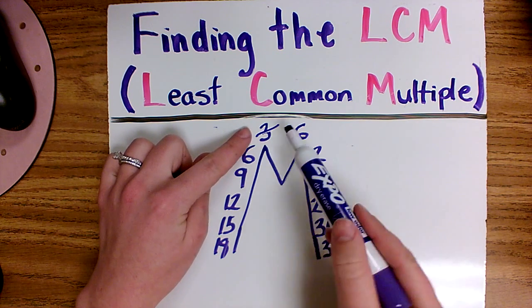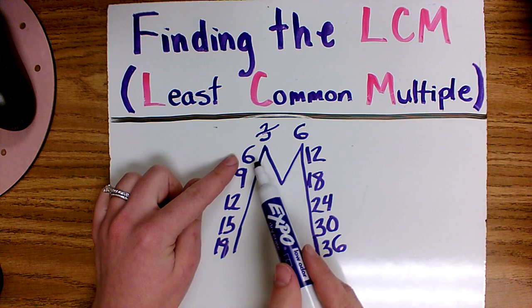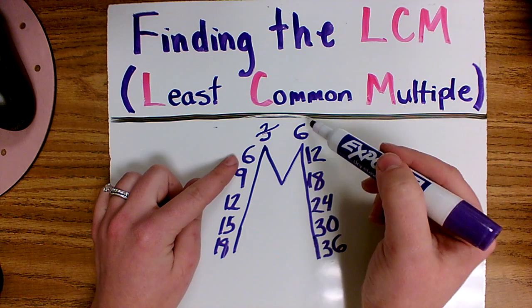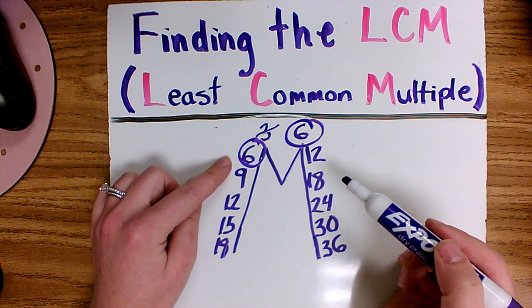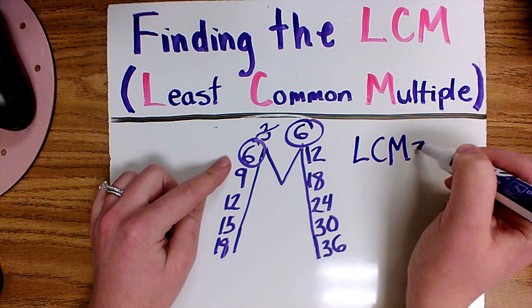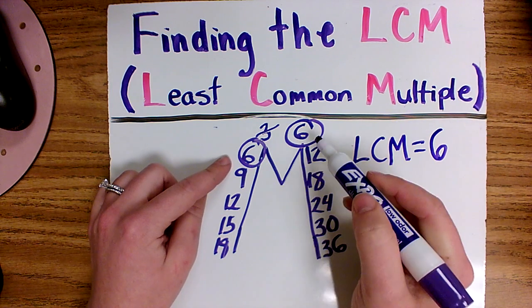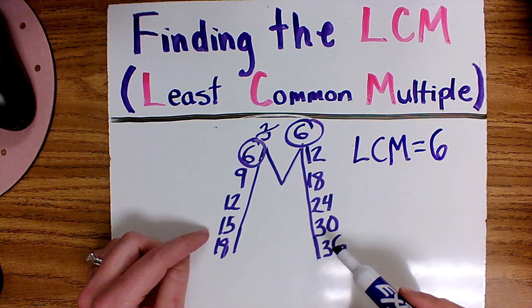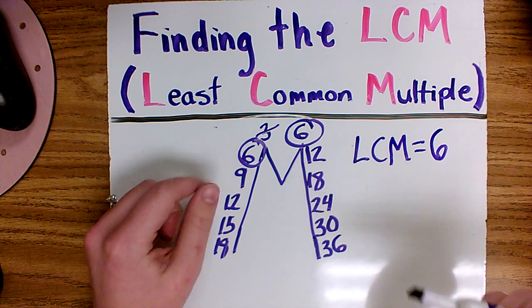There's no 3, cross it off, go down one. 6, there is a 6 on this side so I circle it and that means that 6 is my LCM because that is a number shared on both sides of the mountain and it's the smallest number that they share.